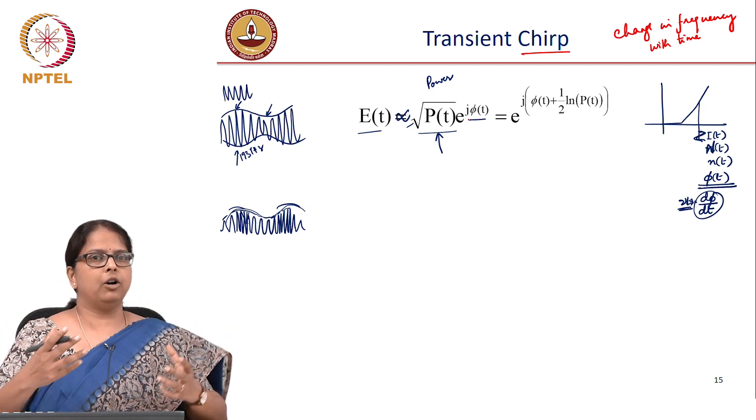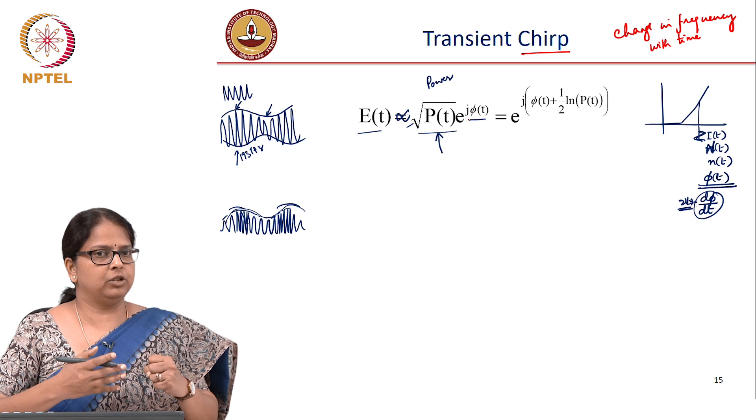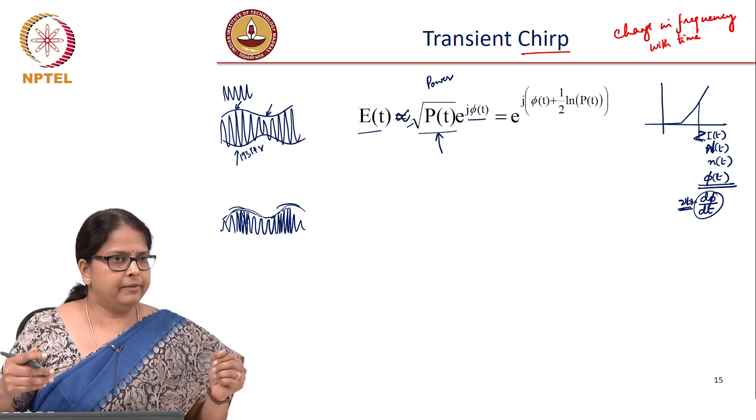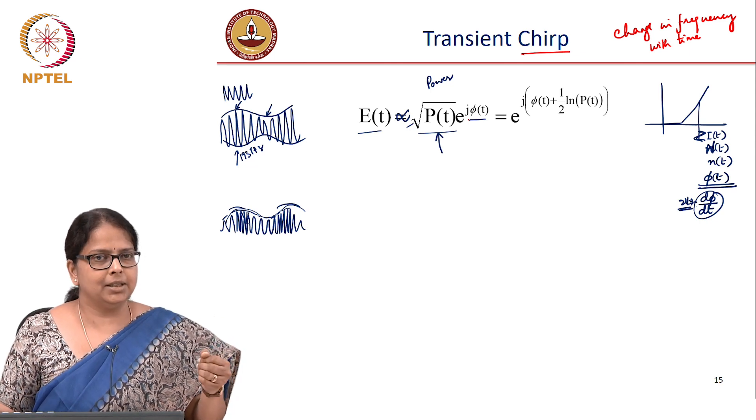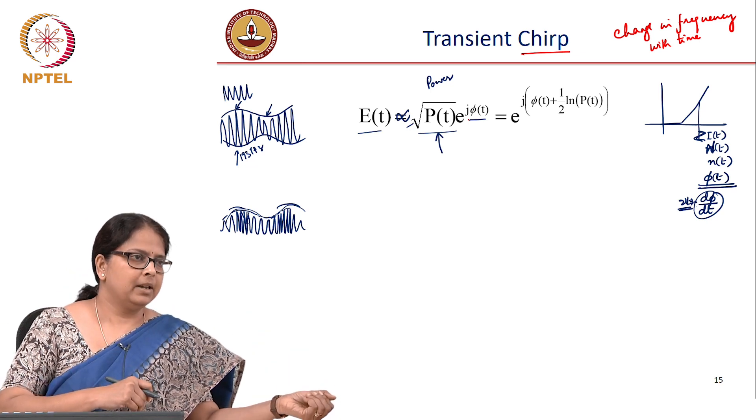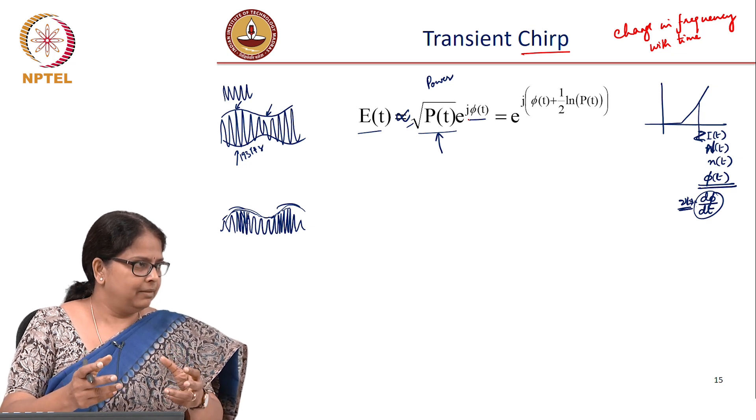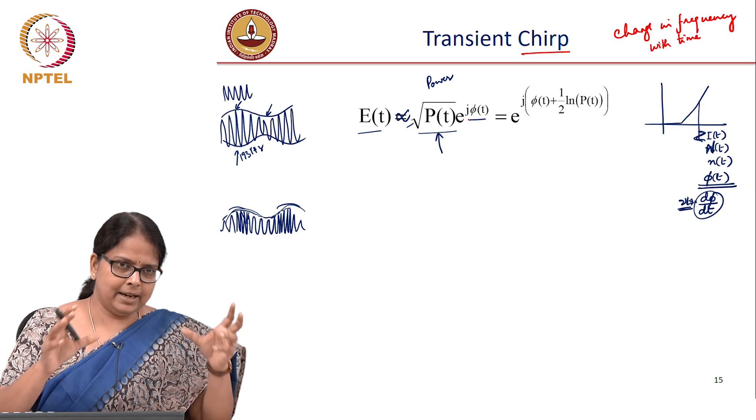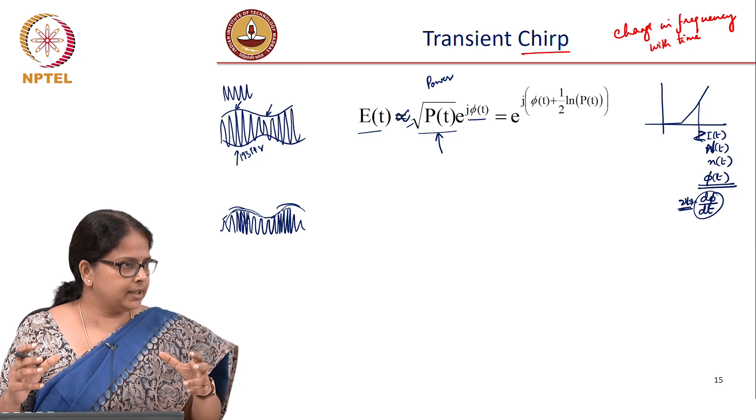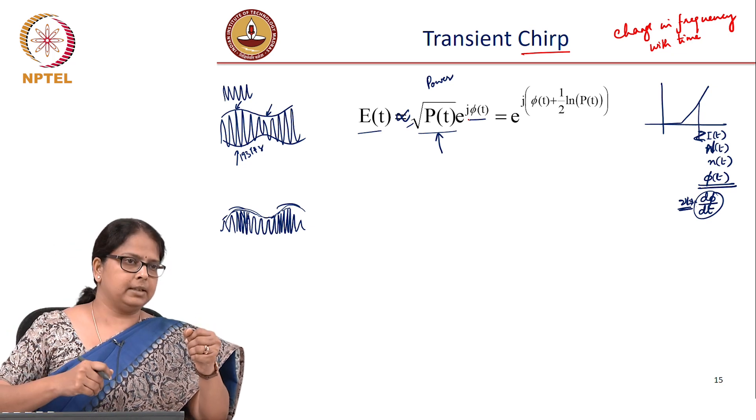How does one quantify this? And this is a characteristic of the medium itself. The change in refractive index with respect to change in carrier density is a characteristic of the medium. So what people have done is they have tried to measure the ratio of phase modulation to the ratio of intensity modulation. Because phase modulation is something that is non-desirable when you have an intensity modulation.